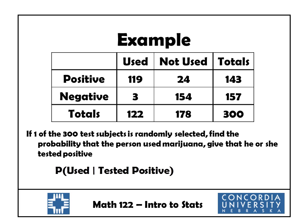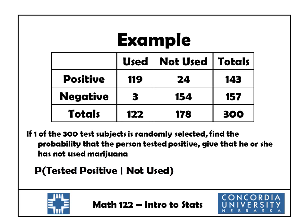Another example, same procedure. Find the probability that the person used marijuana given that he or she tested positive. If we know the person tested positive, we're really only dealing with one of the 143 people who tested positive — that's our denominator. Out of those, 119 of them actually used marijuana, so we have 119 divided by 143, which is 0.832. Another example: find the probability that the person tested positive given that he or she has not used marijuana. Only 178 of those people have not used marijuana; out of those, 24 tested positive. So 24 divided by 178 is our conditional probability.